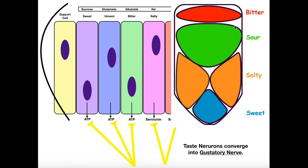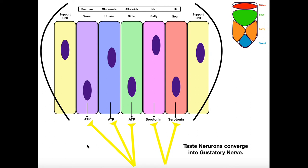There's something called a taste map that has since been disproven. They used to think that bitter things were sensed in the back of the tongue, sours in the middle, and salty and sweet more in the front. This has been disproven because now we know that taste buds are all over the tongue, and they're made up of all of these different gustatory epithelial cells that respond to a variety of stimuli. So the taste map is no longer valid.